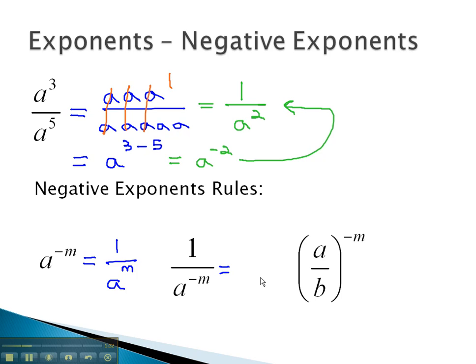If the negative exponent occurs in the denominator, this means the leftovers will be in the numerator. We get a to the m, over 1 in this case.